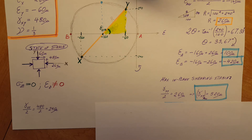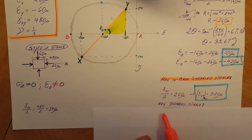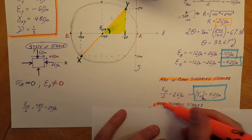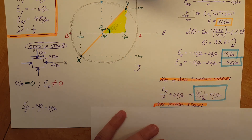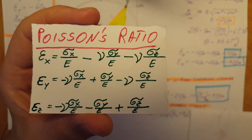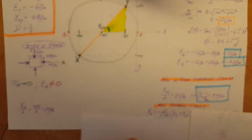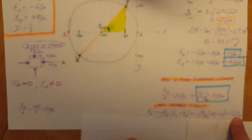The next question asks for the maximum shearing strain overall — different from the maximum in-plane shearing strain. In-plane only covers the XY direction, but now we need the maximum shearing strain in all three directions. For this, we rely on Poisson's ratio. Using the formula: epsilon in the z direction equals negative nu over (1 minus nu), times (epsilon x plus epsilon y). After plugging in, we find strain in the z direction equals positive 160 microns.